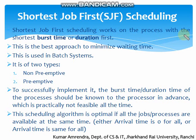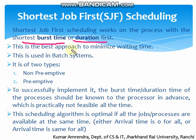Shortest Job First scheduling works on the process with the shortest burst time, which is the smallest burst time. The burst time is the execution time or duration. Shortest Job First is the best approach to minimize waiting time. After studying all the scheduling algorithms, we will analyze which scheduling algorithm gives the minimum average waiting time.